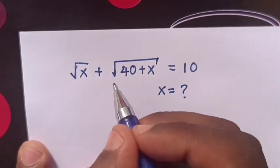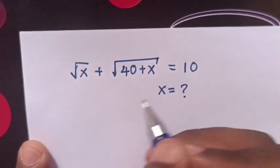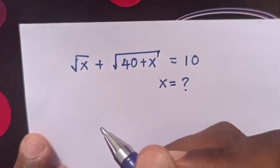Hello, how to solve square root of x plus square root of 40 plus x equals 10. Find the value of x.